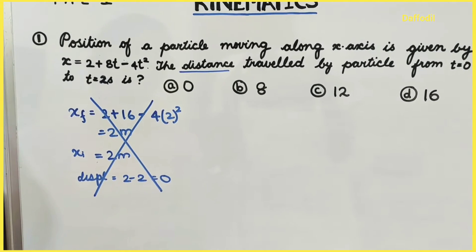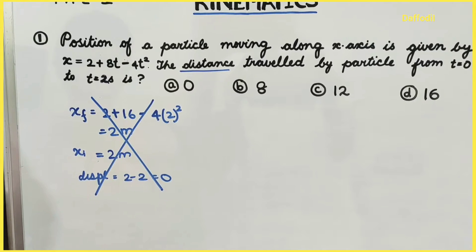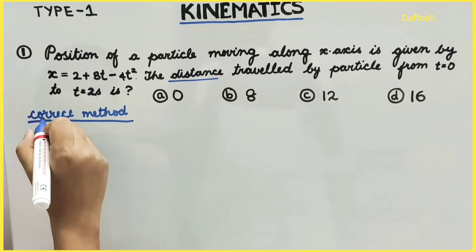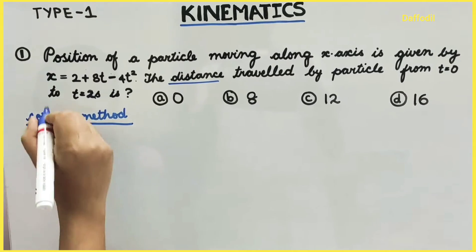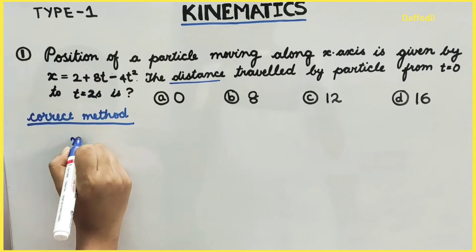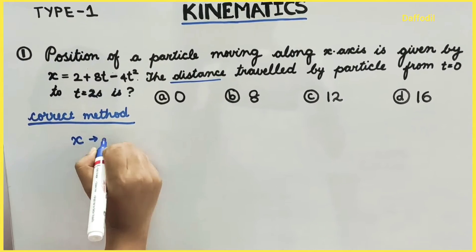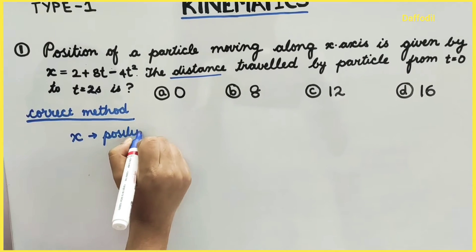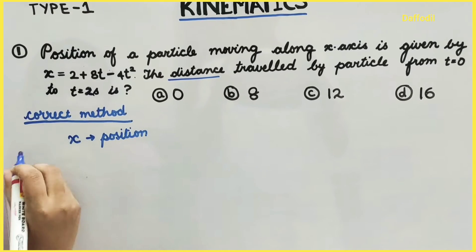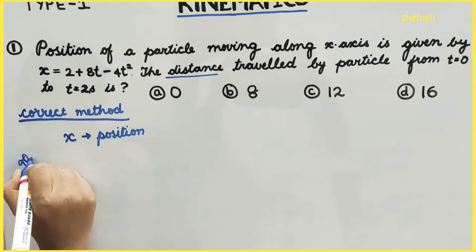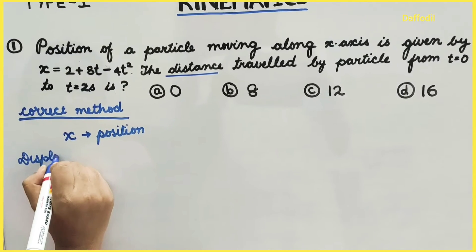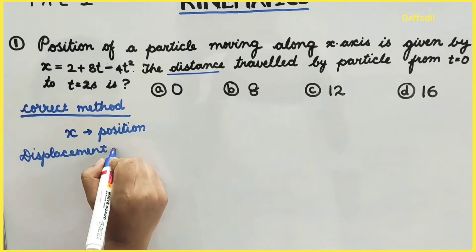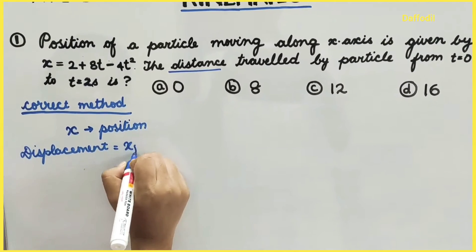That was the wrong method. Let's now look at the correct method as well. The correct method involves understanding the difference between distance and displacement — final position minus initial position gives displacement, not distance.